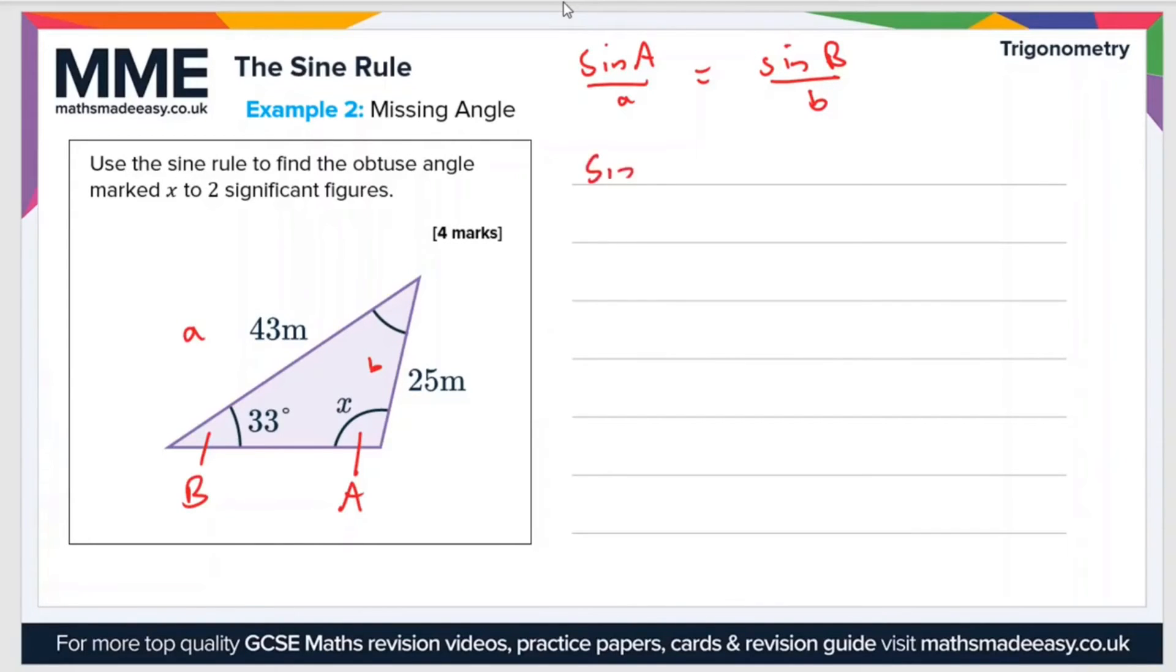Plugging these into the expression then, we get that sine A, or sine X now, divided by A, so that's 43, equals sine B, so sine 33, divided by B, which is 25.